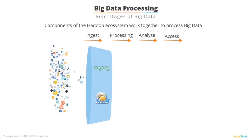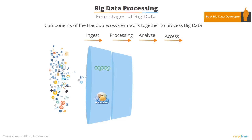The second stage is Processing. In this stage, data is stored and processed. The data is stored in the distributed file system HDFS and the NoSQL distributed data store HBase. Spark and MapReduce perform the data processing.